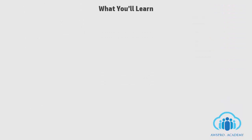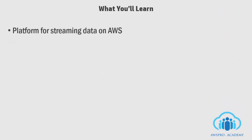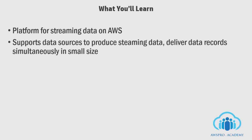What you will be learning in this course: I will be covering the Kinesis platform and 3 core Kinesis services. Kinesis is a platform for collecting, processing and delivering streaming data on AWS. You can use the Kinesis platform to load and analyze streaming data and also build custom streaming data applications for specialized needs.